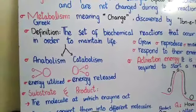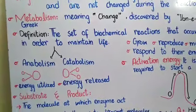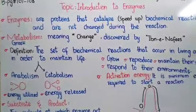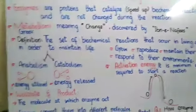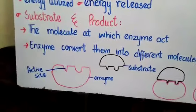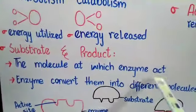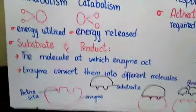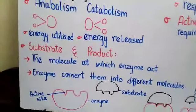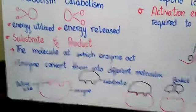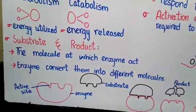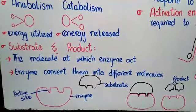Enzymes are proteins made of amino acids. They increase the speed of chemical reactions in your body and are not consumed in the process. The molecules on which an enzyme acts are called substrates. When an enzyme needs to play its role in a chemical reaction, the substrate attaches to the enzyme, and together they speed up the biochemical reactions in your body.